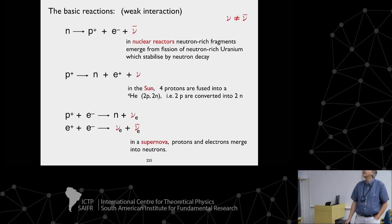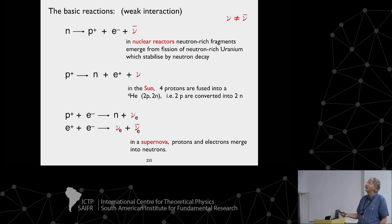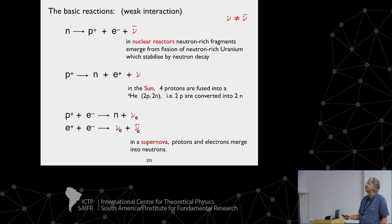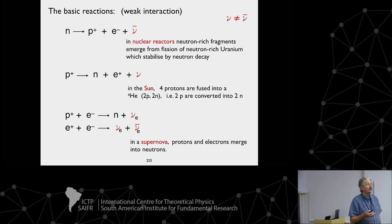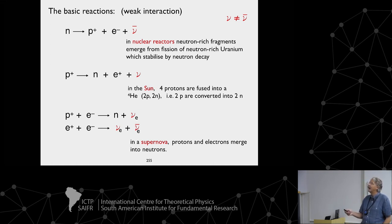The basic reactions that produce neutrinos are all weak interactions. A neutron decays into a proton plus an electron plus a neutrino — that's the classical beta decay process by which neutrinos were discovered, and they happen in nuclear reactors. In a nuclear reactor we break up a heavy nucleus into smaller ones; the heavy nuclei are neutron-rich, so there are spare neutrons that must decay, giving us a source of antineutrinos.